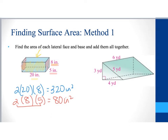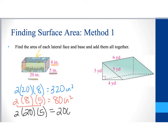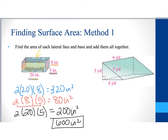Then there are two more faces — the top and the bottom — each measuring 20 wide by 5 long. So 2 times 20 times 5, or 10 times 20, gives us 200 square inches. Adding all three results together — 320 plus 80 plus 200 — gives a total surface area of 600 square inches. If this were a gift, you'd need 600 square inches of wrapping paper to cover that rectangular prism.